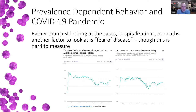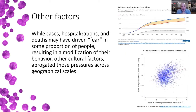So rather than just looking at cases, hospitalizations, or deaths, another factor we've looked at is the fear of disease. This is somewhat hard to measure, but YouGov has done some studies on this. There was a rapid increase initially in fear — how people were avoiding crowded places and fearing catching COVID went up pretty dramatically early in the pandemic, then came down a little, stayed constant through 2020, and then declined as vaccines became available. Of course these are averages across the U.S., and having measures at a local level has not been as feasible.